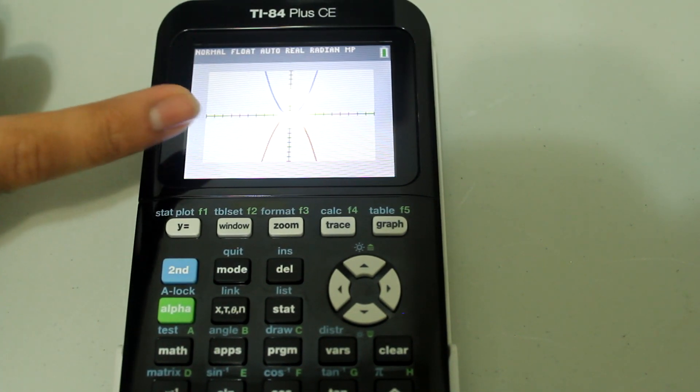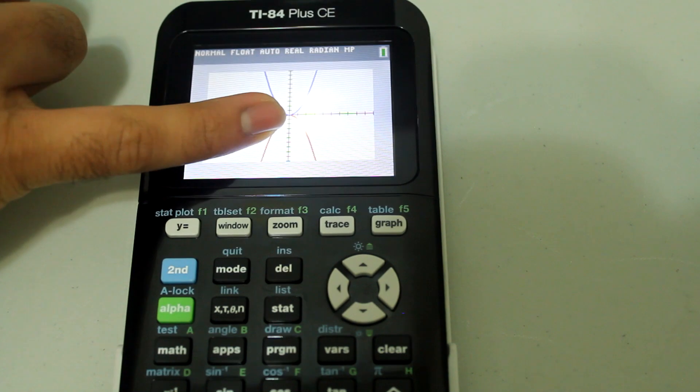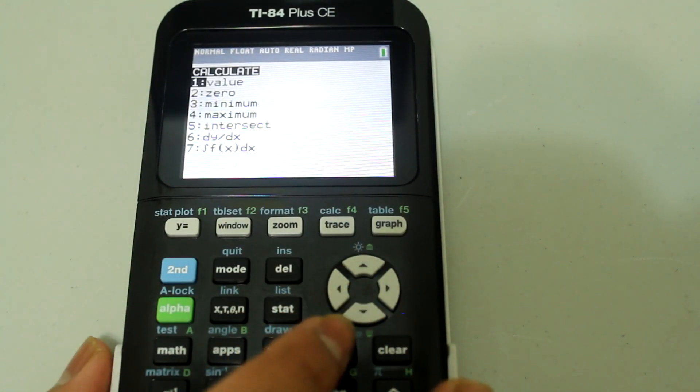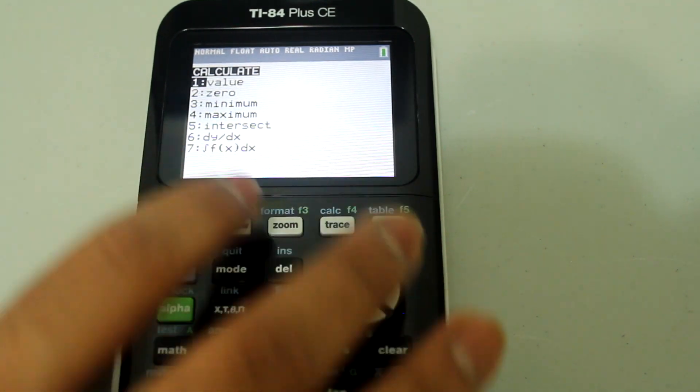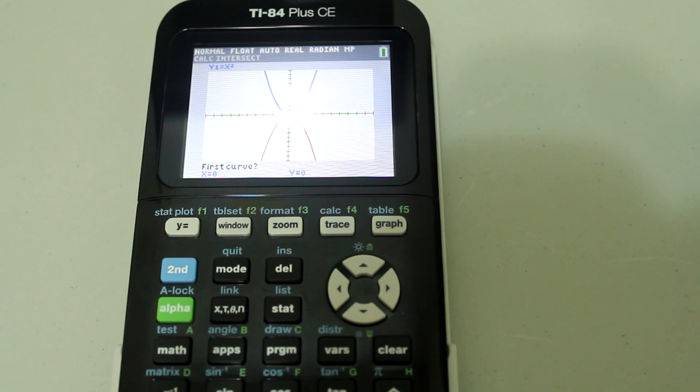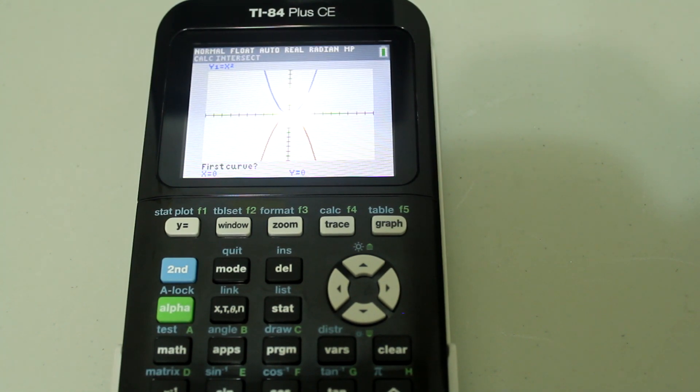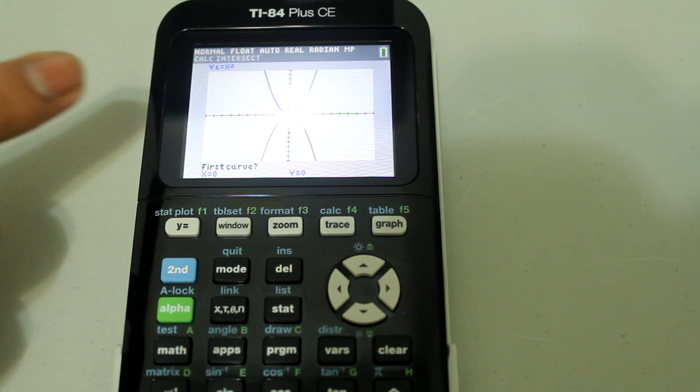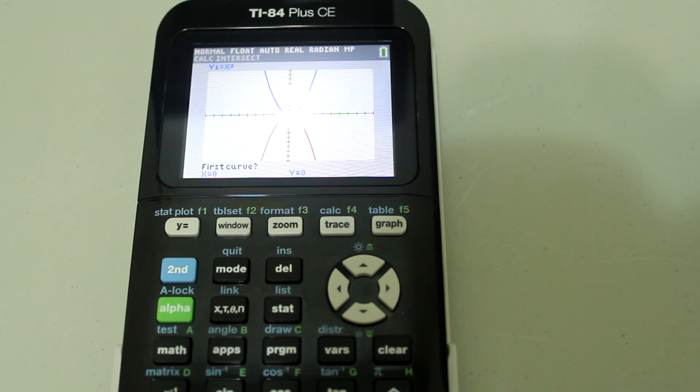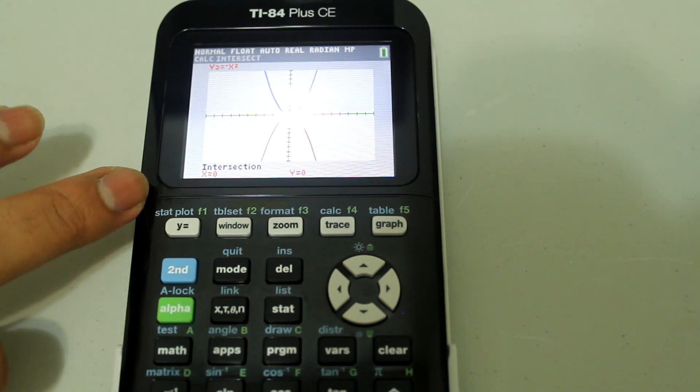Now if I wanted to find the intersection of these two graphs at this point, all I have to do is second trace, just like before. And then intersect is number 5, so I do number 5. And this time all I have to do is just figure out where the intersection is approximately located, and that's at 0, 0. So I put the cursor there, hit enter once, hit enter twice, and a third time. And the intersection is at 0, 0.